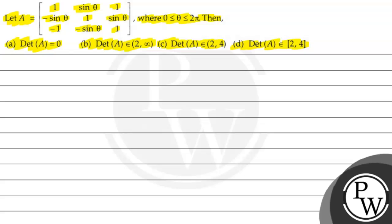The matrix elements are: first row 1, sin theta, 1; second row minus sin theta, 1, sin theta; third row minus 1, minus sin theta, 1. Given the condition 0 less than or equal to theta less than or equal to 2 pi, we have 4 options — which option is correct?